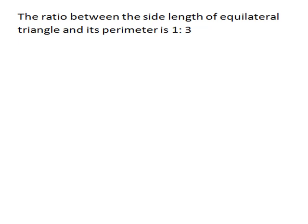The rhombus is the same as the square in this regard. The ratio between the side length of a rhombus and its perimeter is 1 to 4. And the ratio between the perimeter of a rhombus and its side length is 4 to 1.